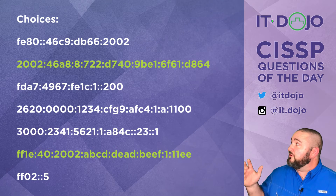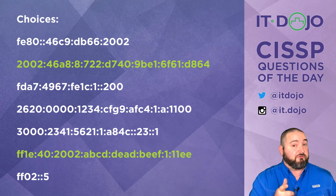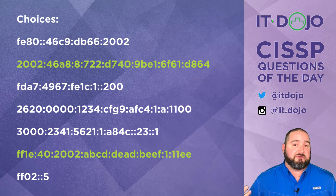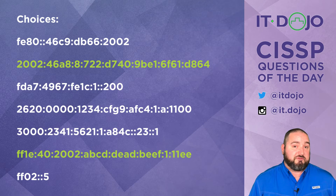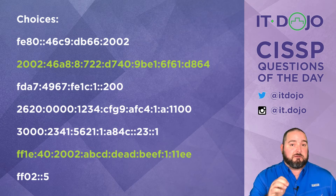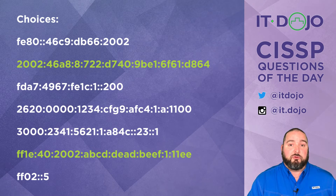The final answer choice is FF02 colon colon 5. FF is multicast, 0 means local to the link, and double-colon means a run of zeros, with the 5 at the end reserved specifically for the all-OSPF-routers multicast IPv6 address — used for OSPF hello messages in a locally routed environment. But this destination multicast address is only good for communicating on a local link and won't be routed on the internet, so you can't send it to anyone more than a router away.